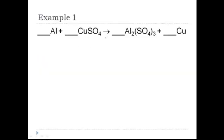So here's your first example. We have aluminum reacting with copper to sulfate to produce aluminum sulfate and some copper. To begin with, we're going to clearly separate the reactants from the products by drawing a straight line beneath the yields arrow.